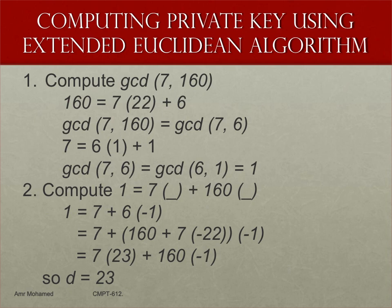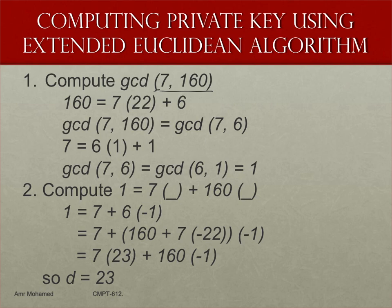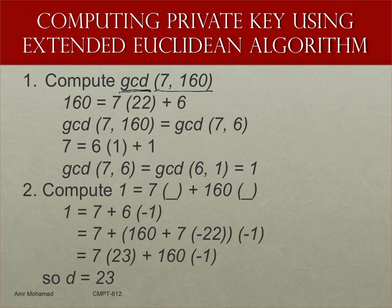The extended Euclidean algorithm talks about how to calculate the greatest common divisor, and then the reverse operation allows you to calculate the multiplicative inverse. We said we can easily get the value of E since it should be co-prime with the totient of N. Once we select E, we want to calculate the multiplicative inverse by computing the GCD between E and 160 — in this case, between 7 and 160, which we know is 1.